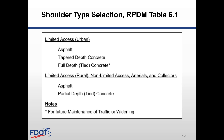Both asphalt and concrete shoulders can be used with rigid pavement travel lanes. Additional guidance on shoulder type selection can be found in Table 6.1 of the Rigid Pavement Design Manual, as shown on this slide. Truck encroachment onto the shoulder is a major cause of shoulder distress. Therefore, truck percentage for the mainline needs to be considered when selecting what type of shoulder should be used, as previously discussed in Module 2.